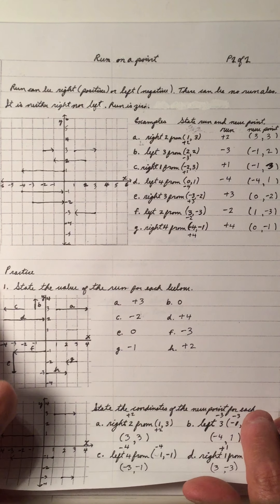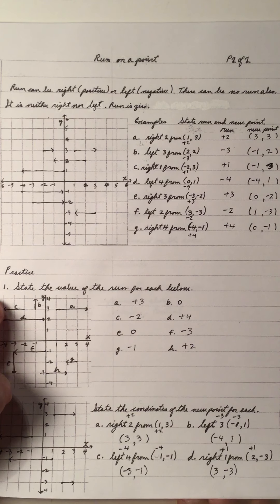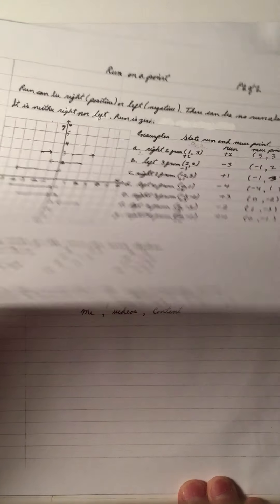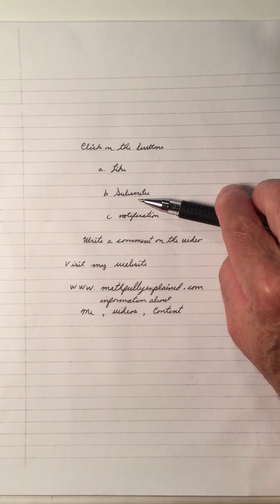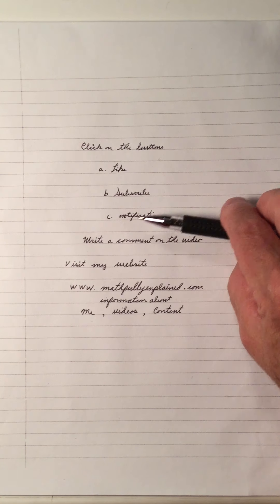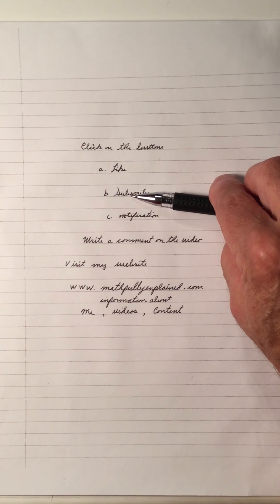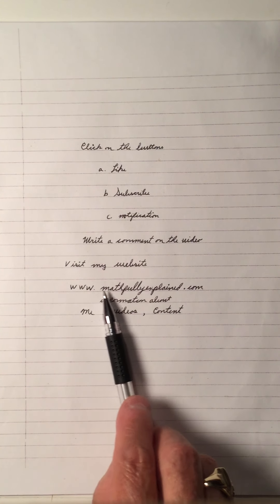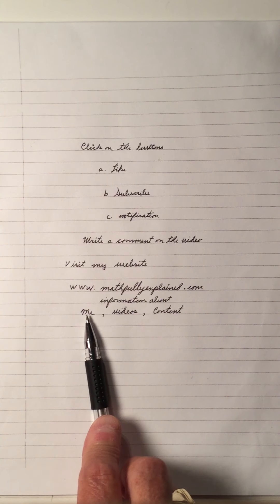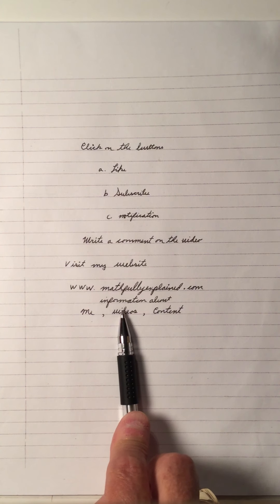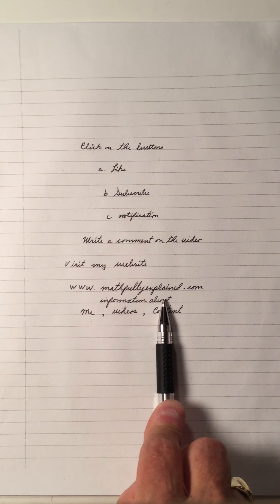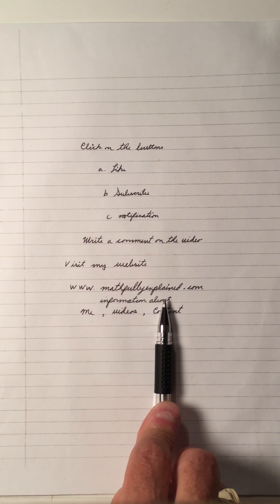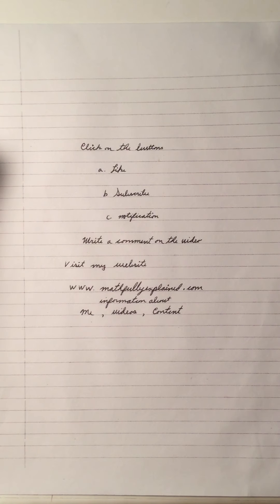So that's a review of doing the run of the point. Run is left to right: right is positive, left is negative. If you like my video, click the like button and subscribe if you're not a subscriber, and the notification bell — more videos coming your way. Visit my math website at www.mathfullyexplained.com, which has sections on my degree and teaching experience, video strategies, and content topics. Thank you very much, bye bye.